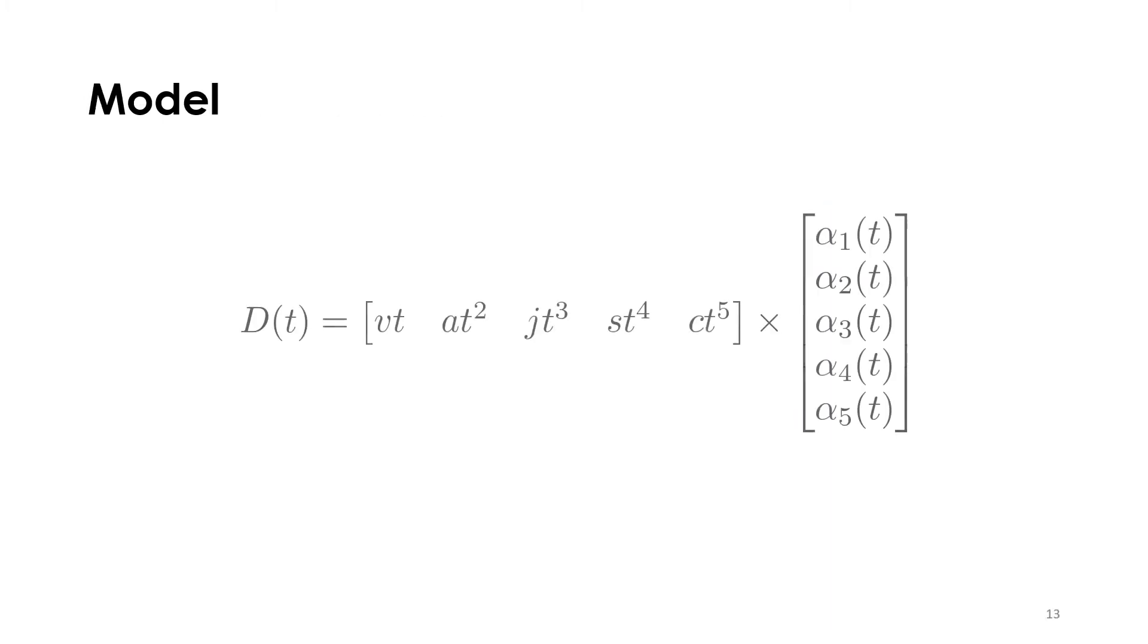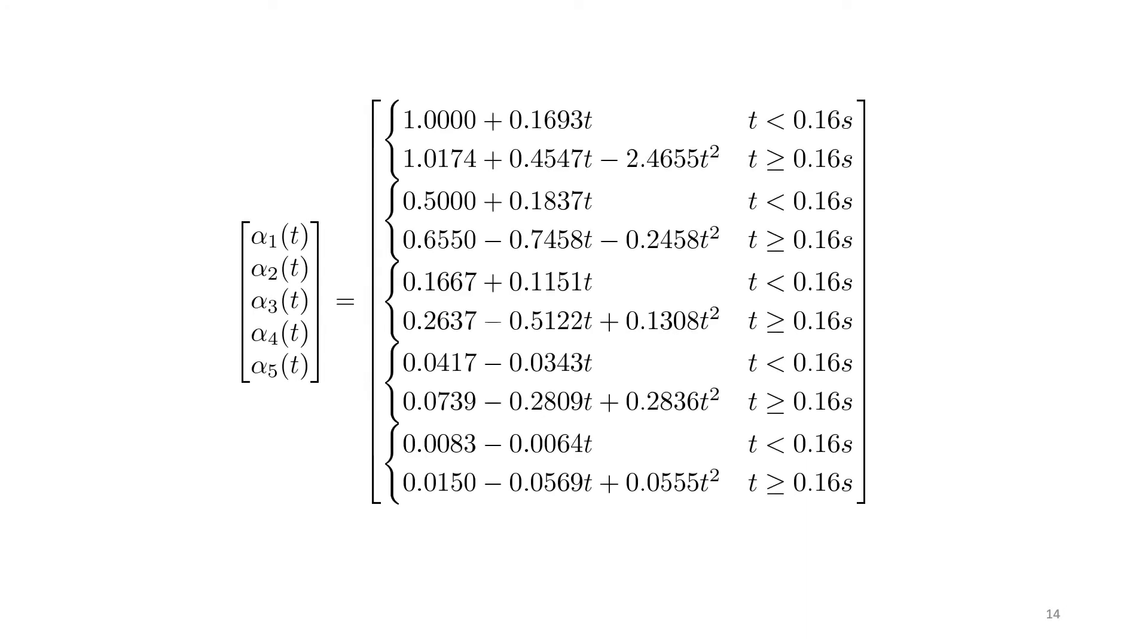So, this is our final model, which can be expressed as this simple equation. It is similar to classical models, but the main difference being the time-dependent coefficient variable alpha. And we empirically derived the values for these coefficient alphas.